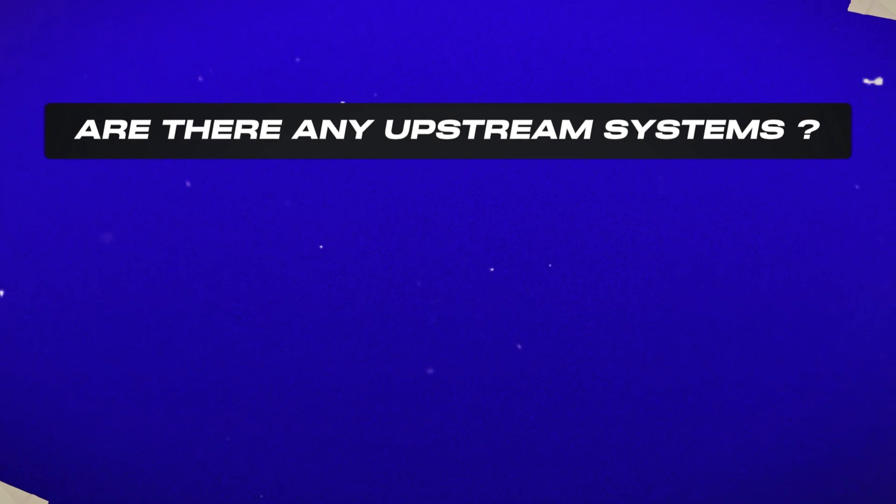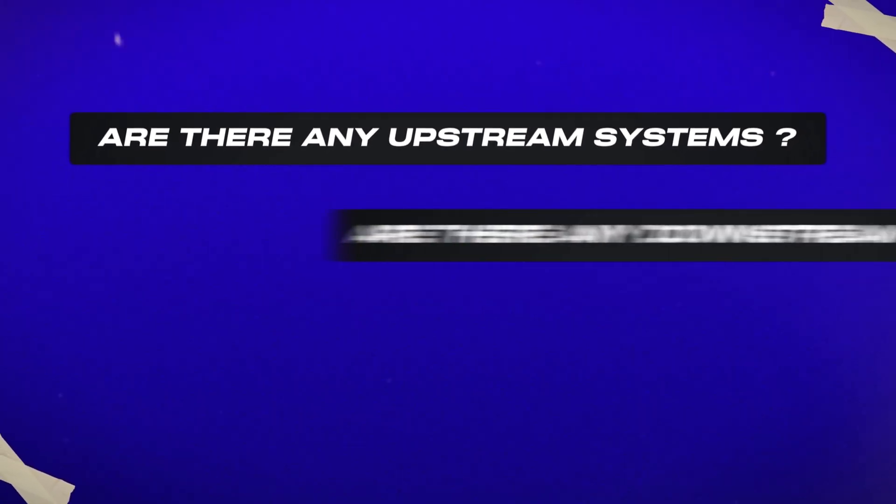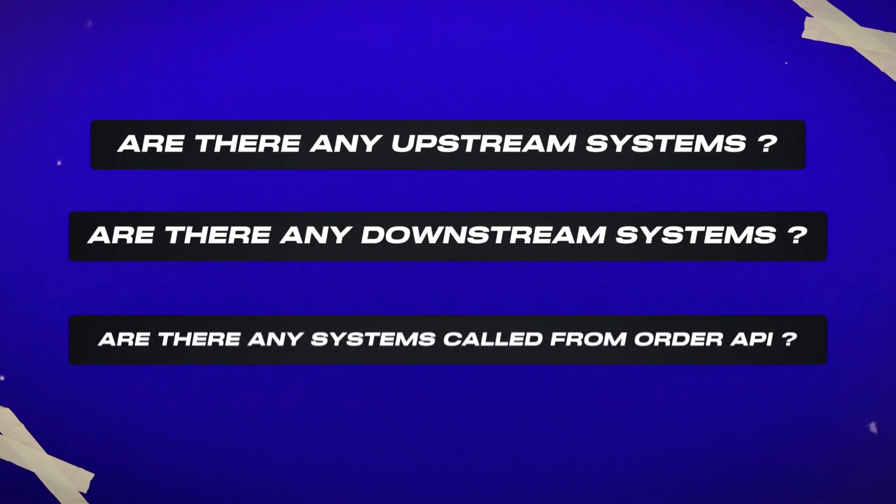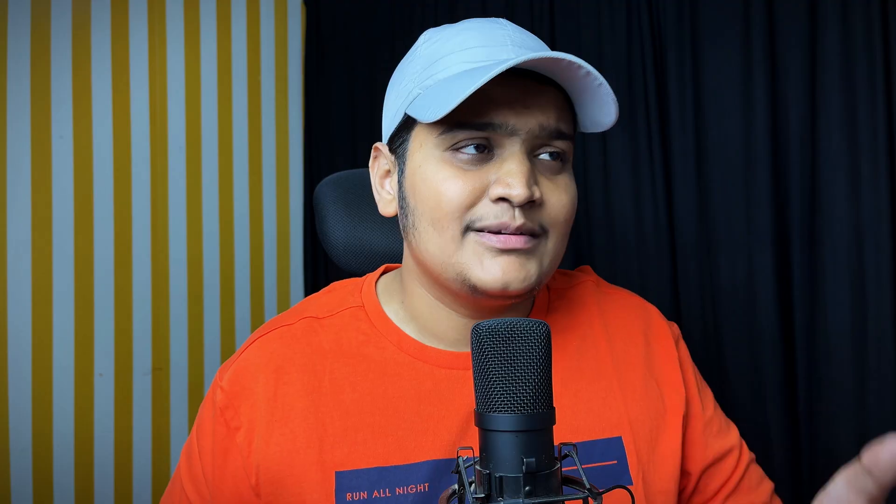For example, with the order API, I need to make sure: are there any upstream systems calling this order API? Are there any downstream systems? Are there any systems called from this order API — suppose payment, add to cart, all those things? I need to make sure that all those APIs are working correctly in conjunction with my existing API, and that integration testing is done throughout the systems so end-to-end functionality is working properly.